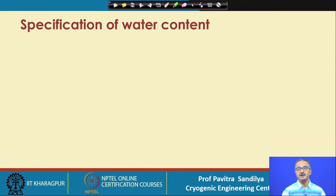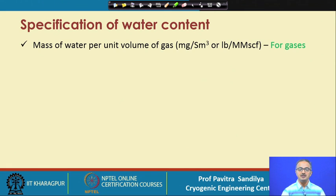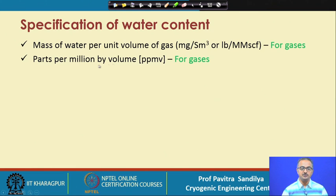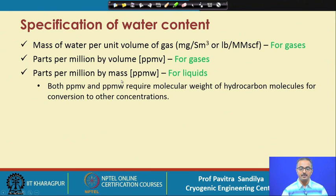There are various ways of specifying the water content. First, in terms of mass of water per unit volume of gas, given generally in milligrams per standard cubic meter or pounds per million standard cubic feet — this is generally used for gases. Another way is parts per million by volume (PPMV), also used for gases. We also have parts per million by mass (PPMW), used for liquids. Both PPMV and PPMW require the molecular weight of hydrocarbon molecules for conversion to other units.